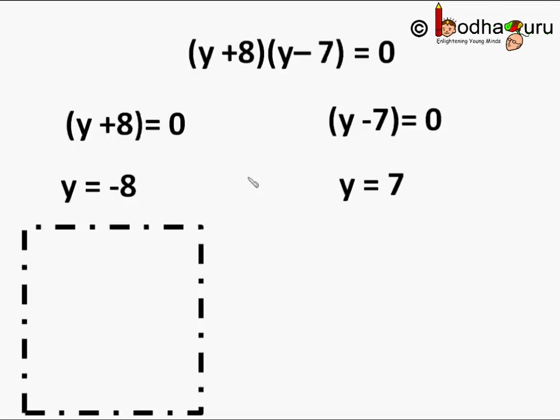y is equal to -8 and y is equal to 7. Both the values would make the value of the polynomial as 0. But length cannot be negative.